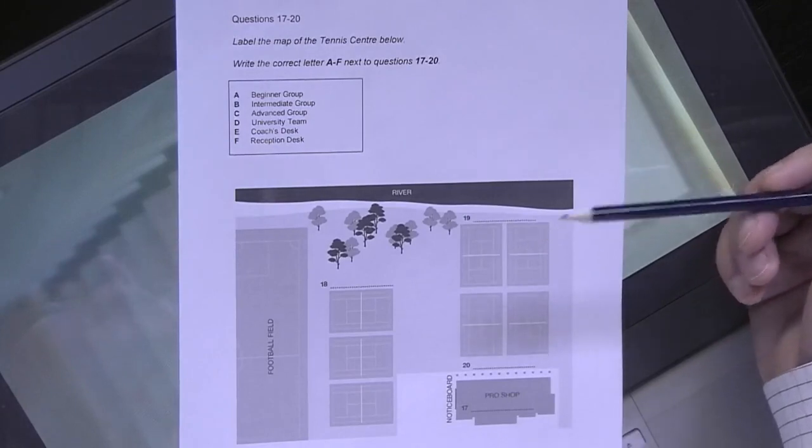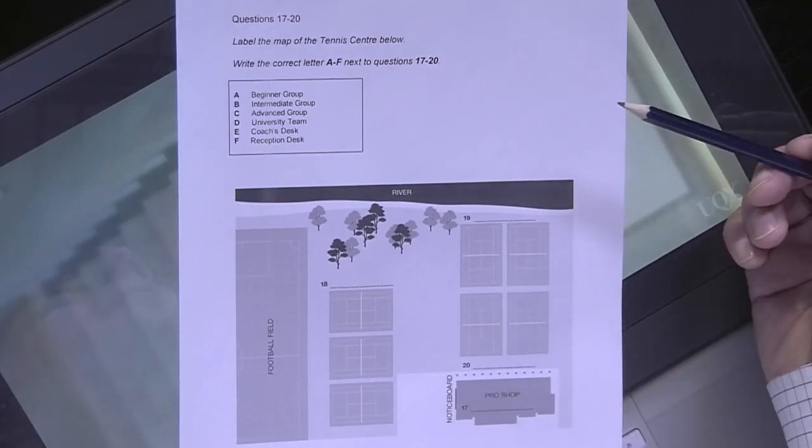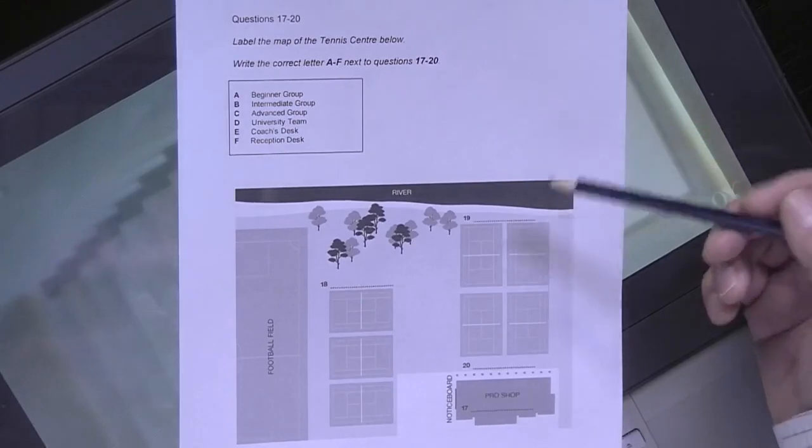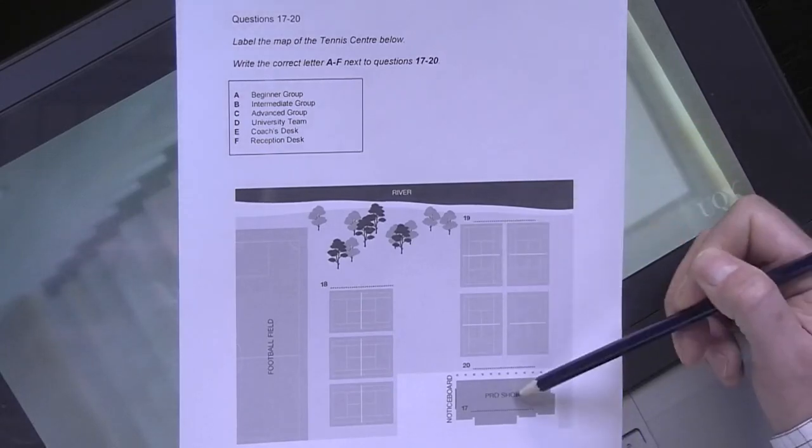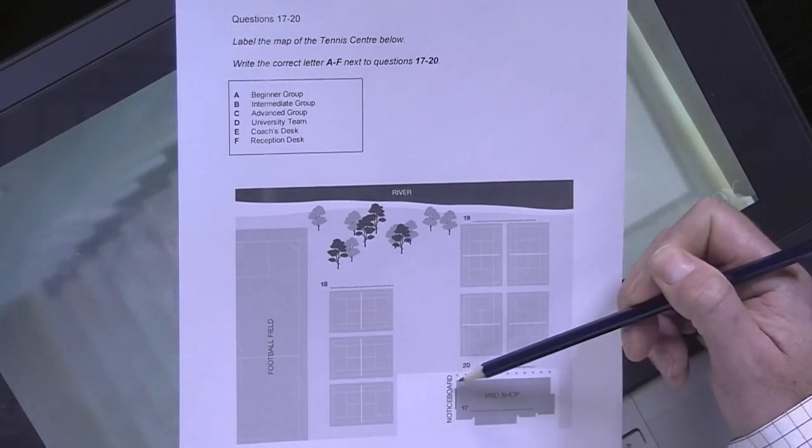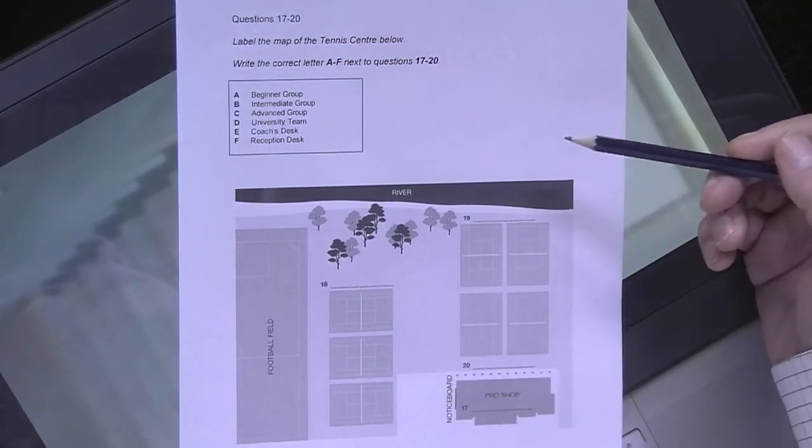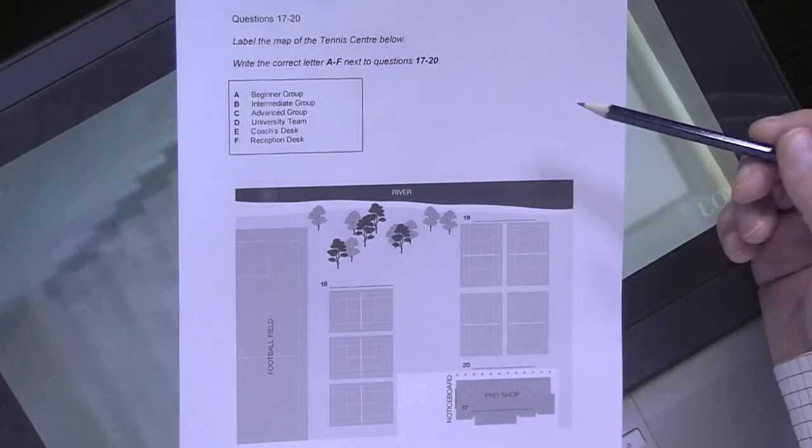You should also check what is already labelled and identify which labels are missing. And then, naturally, you should look at the options that you're given here.